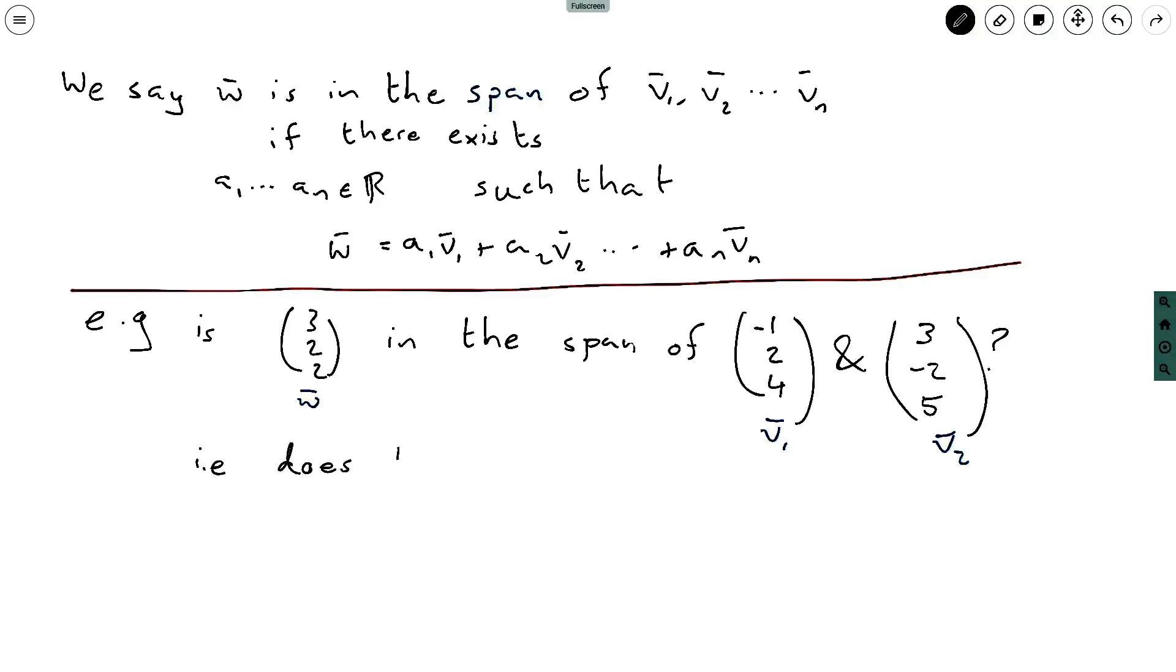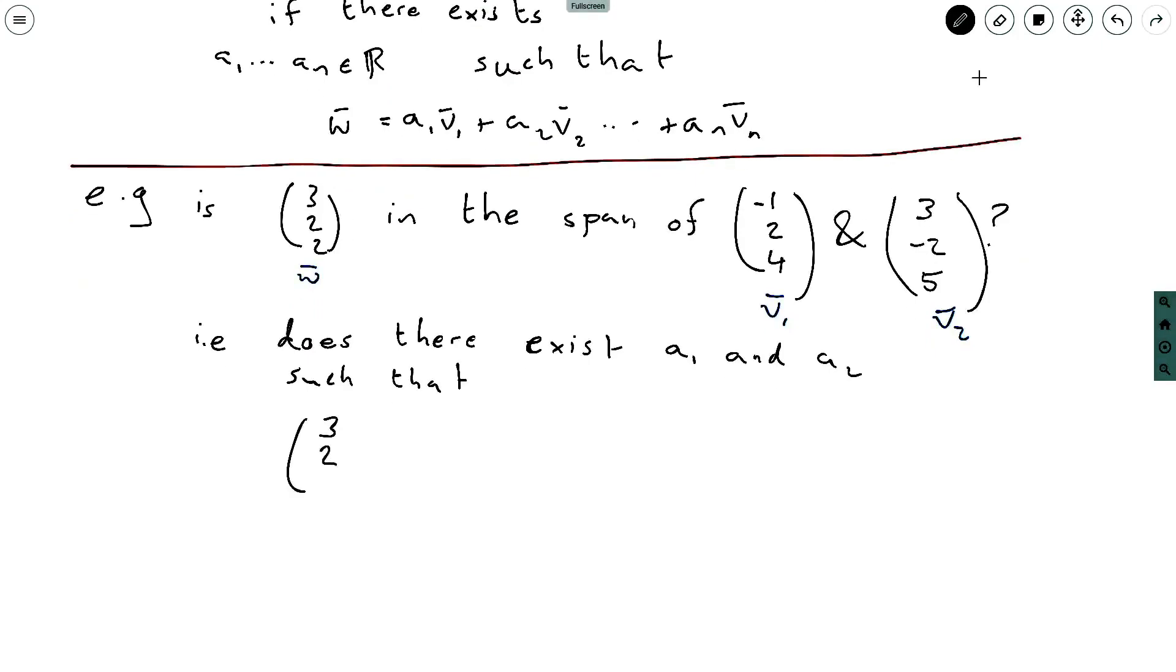i.e. does there exist... And notice we have two vectors here, v1 and v2, so in our case n is equal to 2. So does there exist a1 and a2 such that (3,2,2) is equal to a1 times (-1,2,4) plus a2 times (3,-2,5).